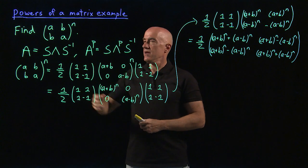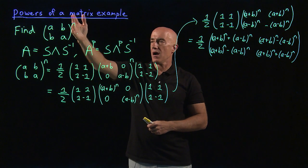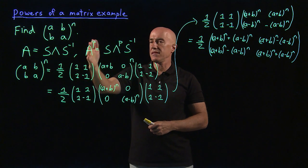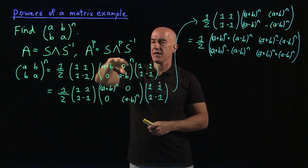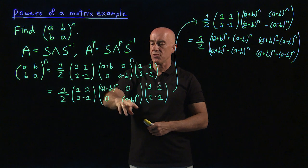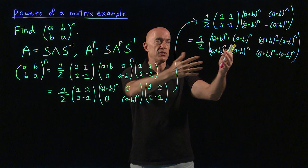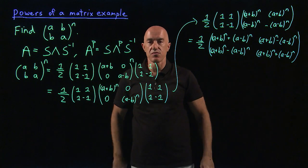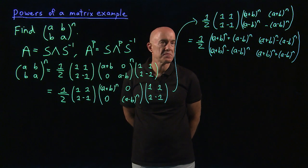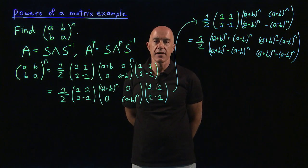So, quick review. To find a diagonalizable matrix raised to some integer power, some large power, you diagonalize the matrix, and then you raise it to a power is just the same thing as raising this diagonal matrix to a power, which is simple to do. It's just the diagonal elements raised to that power. And then with two multiplications, you can get the final result. I'm Jeff Chasnoff. Thanks for watching. And I hope you now understand the power of matrix diagonalization.